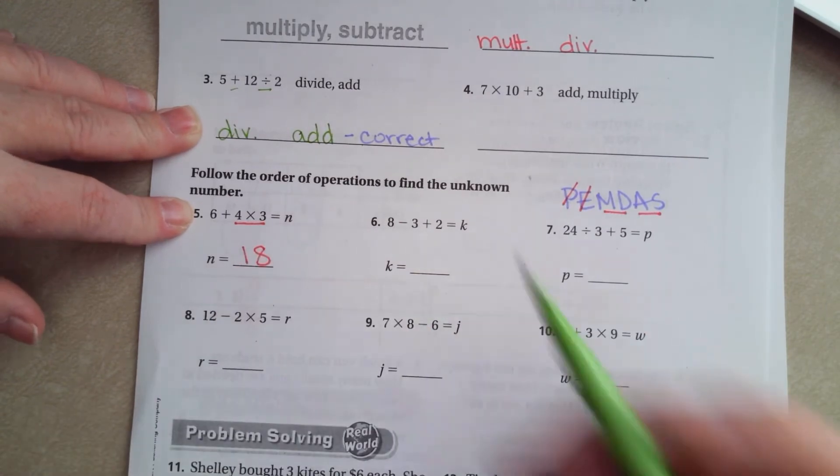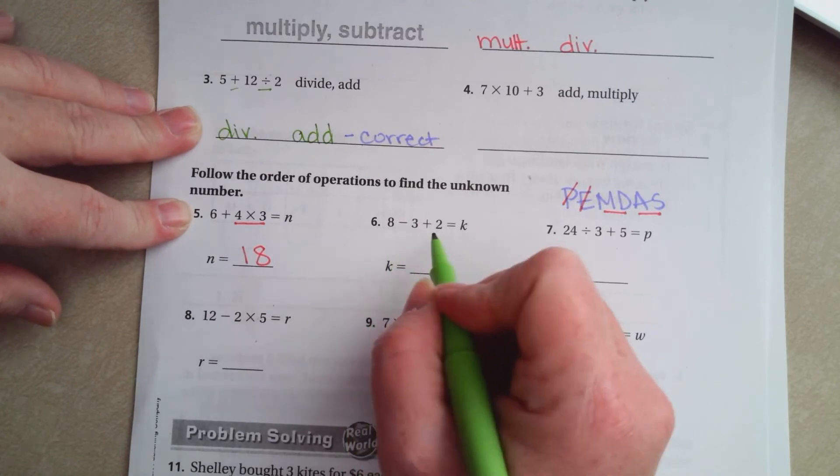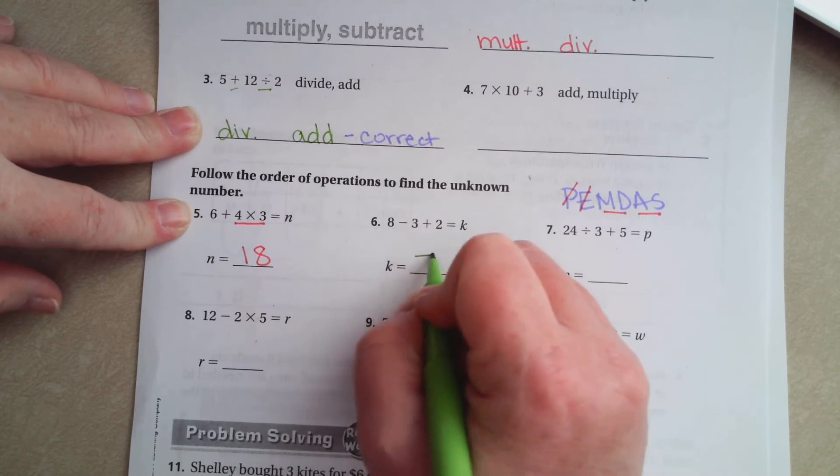This one only has addition and subtraction so we can go ahead and do it straight across. 8 minus 3 is 5 plus 2 is 7.